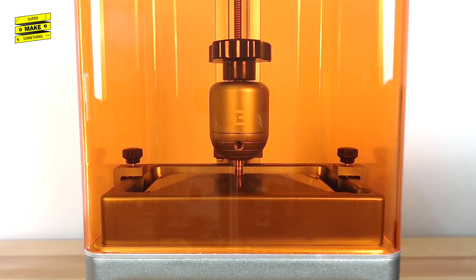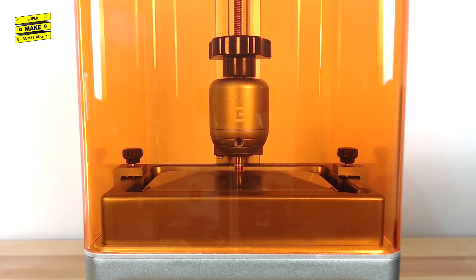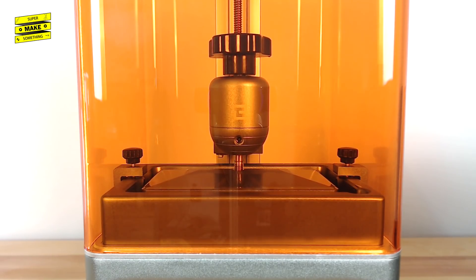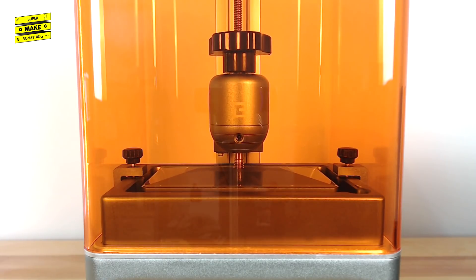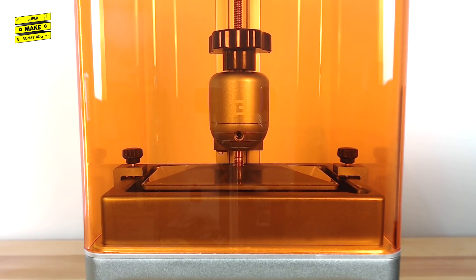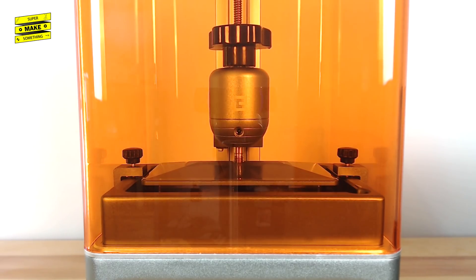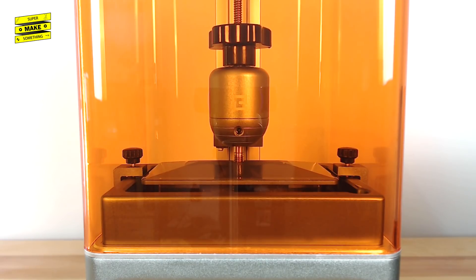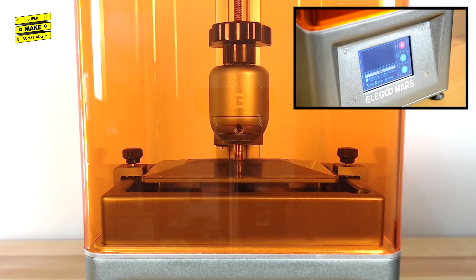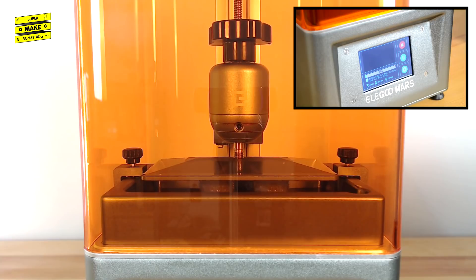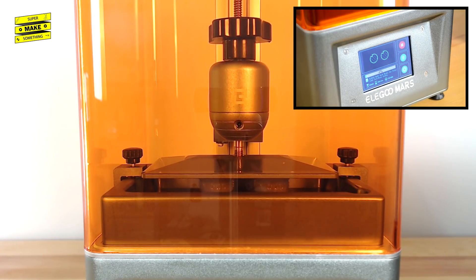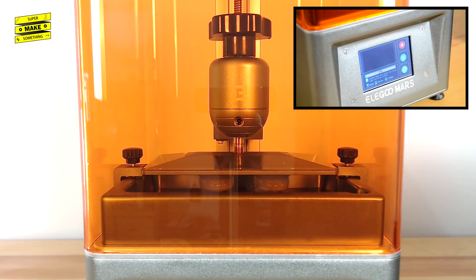During the print process, the print head moved the print surface up and down towards the masking LCD screen, exposing each layer of the model to UV light for a set amount of time, before raising slightly to allow more resin to flow underneath the cured layers in order to build the next one. One thing I thought was very cool was that the LCD screen on the front of the unit showed me which layer was currently being exposed, along with other information such as elapsed and remaining print time.